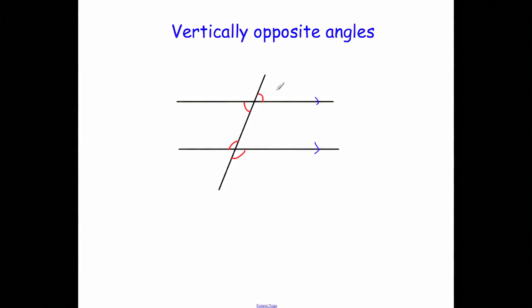Also remember that vertically opposite angles are the same. If you've got two lines crossing each other, the opposite angles are equal — so if one is 50 degrees, the angle opposite it is also 50 degrees.